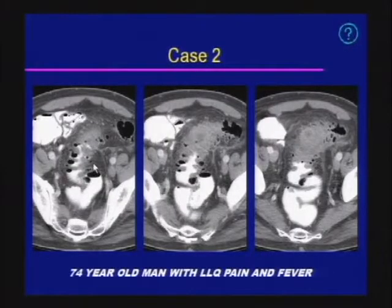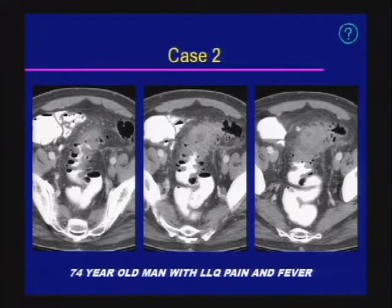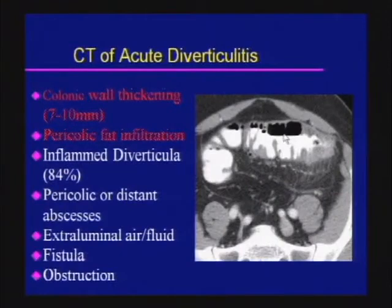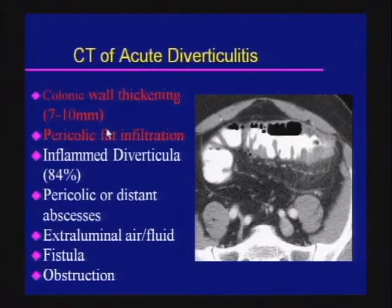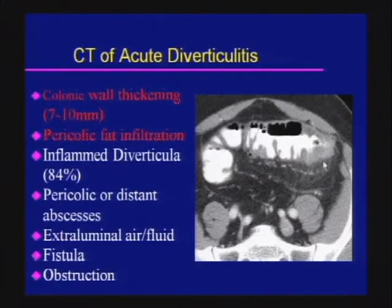Case two: a 74-year-old male with left lower quadrant pain and fever. There is thickening of the cecum, multiple diverticula, pericolonic stranding, and a low-attenuation structure within the wall suspicious for an intramural abscess — consistent with diverticulitis. Colonic wall thickening can be very marked, up to 10 millimeters. The first two signs — pericolonic stranding and an inflamed diverticulum — are the most sensitive and specific. Look for pericolonic or distant abscesses and extra-luminal air and fluid suggesting macroperforation.